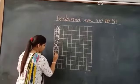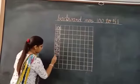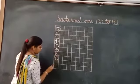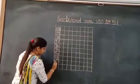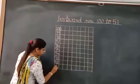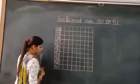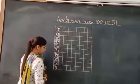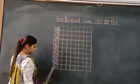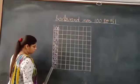94, 93, 92, 91. Look at here children. Which number will come before 91?